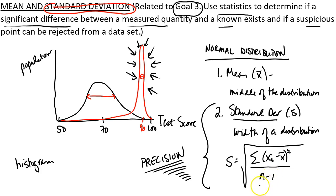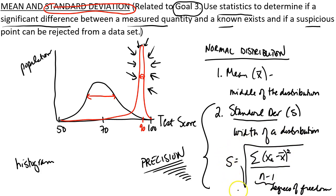One final note about standard deviation: the quantity n minus 1 is called the degrees of freedom. I'm not going to do examples on how to use this formula here — when we're in class, I'll show you how to use your calculator to calculate the standard deviation. So that was just a very brief overview of mean and standard deviation.